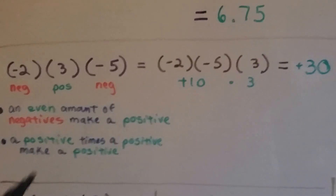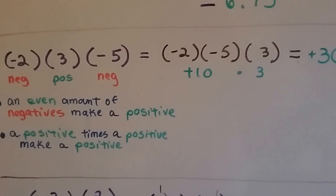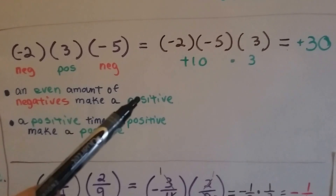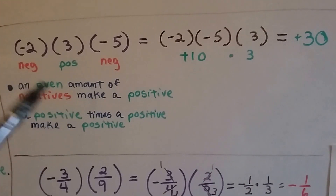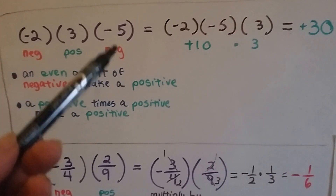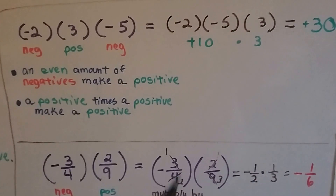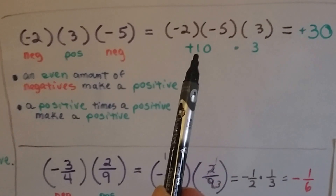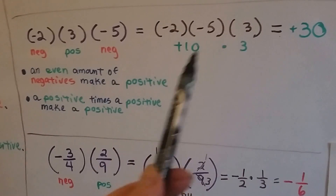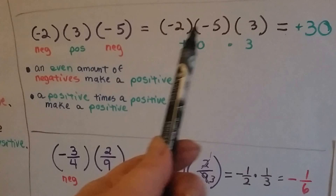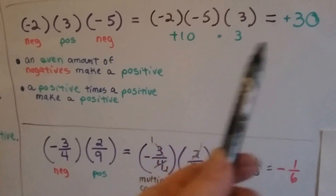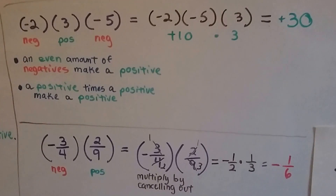Now we have negative 2, positive 3, and negative 5. We have two negatives — that's an even amount — so the product will be positive. Negative 2 times negative 5 makes positive 10. We can change order in multiplication; the associative property says we can multiply any two together first. Then we multiply positive 10 by positive 3 and get positive 30. Positive times positive makes a positive — like signs.